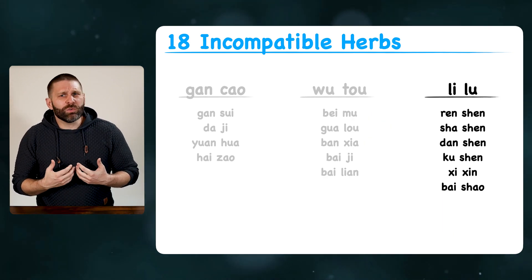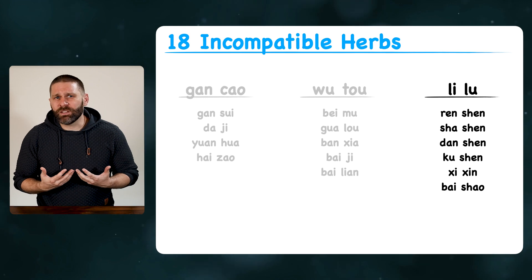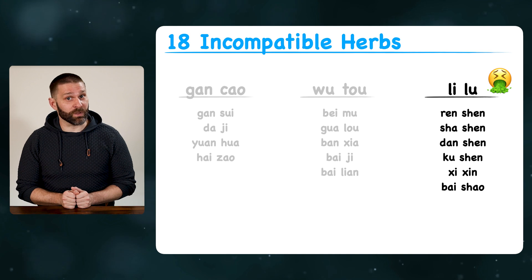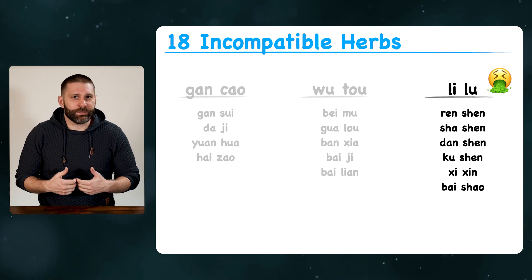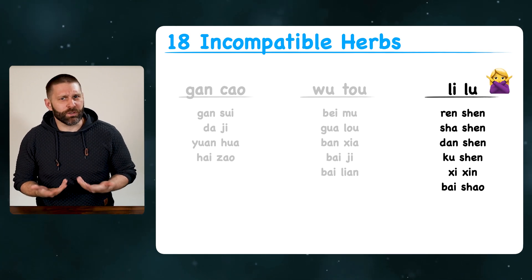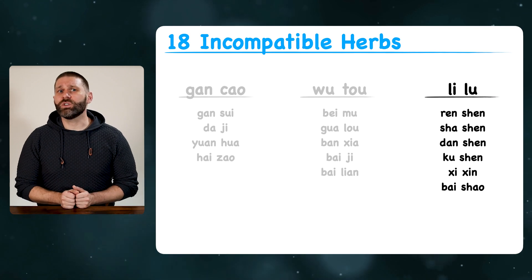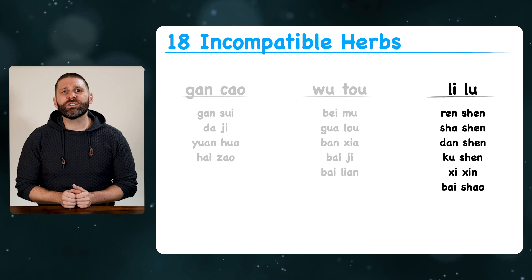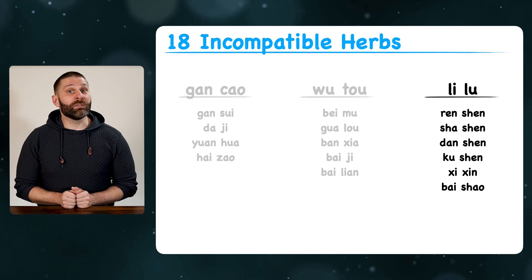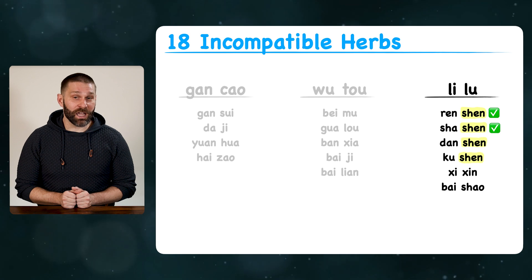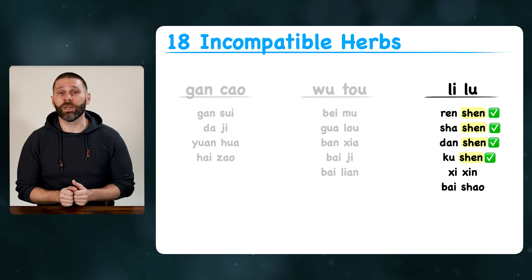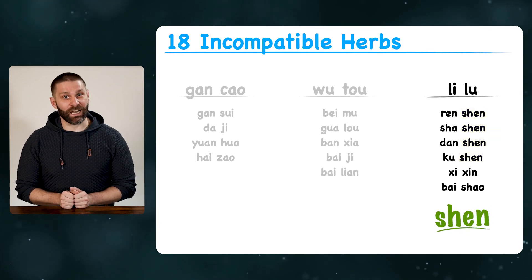The last group is Lilu. This is an herb that we don't learn and isn't typically used. Lilu is very toxic and is used to induce vomiting in the treatment of wind phlegm, which is just not a treatment strategy we really use anymore. So you may or may not get questions about it. But I'd remember that this is the group of shen herbs: Ren shen, Sha shen, Dan shen, Ku shen — even Xixin sounds kind of like shen. So for Lilu, think of shen.